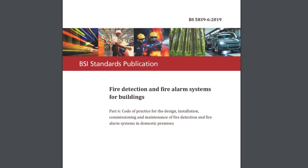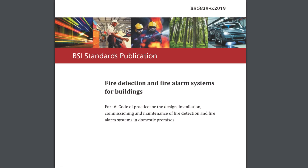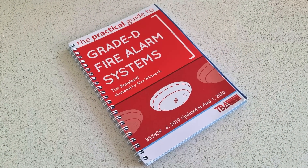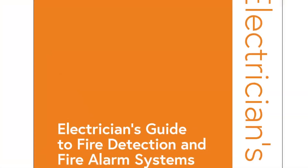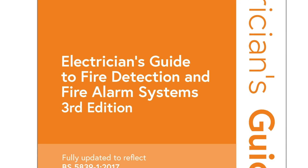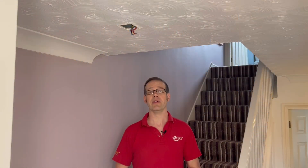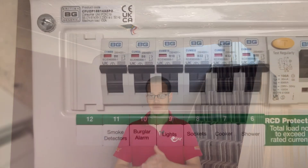This subject of fire alarm grades can get a little confusing because as well as grades of alarm there's also categories of alarm. Fire alarms should conform to the standards in the BS 5839 series, and for fire alarms in dwellings it's particularly Part 6. Guidance on this can be found in the Practical Guide to Grade D Fire Alarm Systems on docstore.co.uk and the Electrician's Guide to Fire Detection and Fire Alarm Systems published by the IET. The grade of system defines the type of system installed and the power supply feeding it.